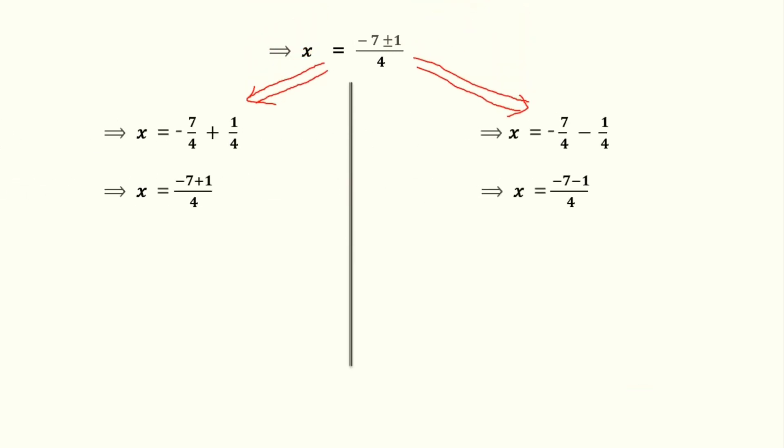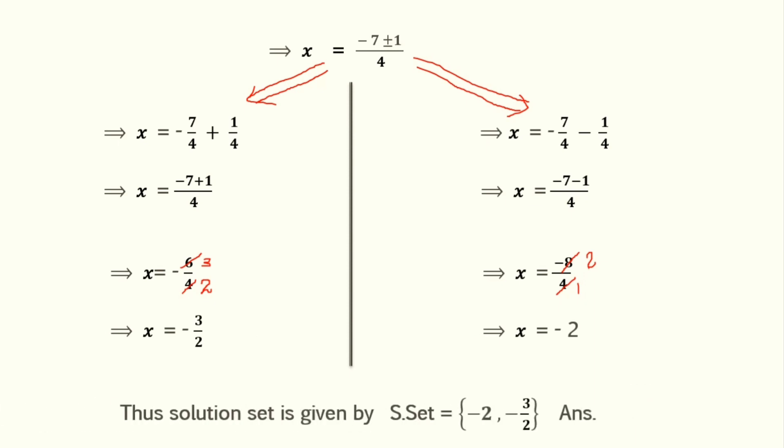Separately solving them after taking proper signs, we get x is equal to minus 3/2 or minus 2. These are the roots of the quadratic equation. Now tabulating them, the solution set is the solution set of the quadratic equation.